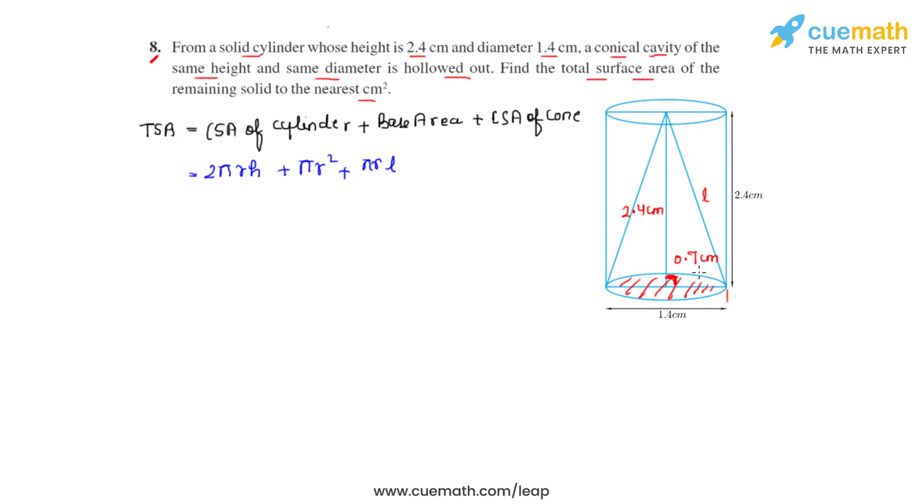l being the slant height, we can apply here Pythagorean theorem and write that l equals √(h² + r²). Now let's substitute the values. We substitute 0.7² plus 2.4², that gives us √(0.49 + 5.76).